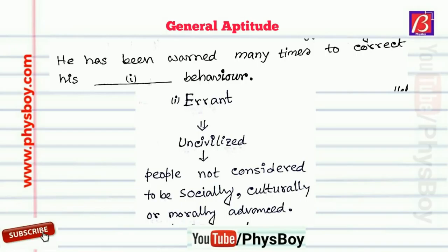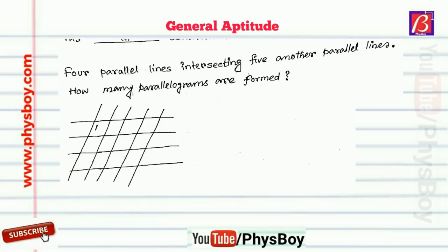So the sentence reads: 'He has been warned many times to correct his errant behavior.' The third question was: for four parallel lines intersecting another five parallel lines, how many parallelograms are formed? You can draw a picture for better understanding — the picture looks like four parallel lines intersecting another five parallel lines.